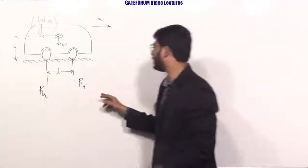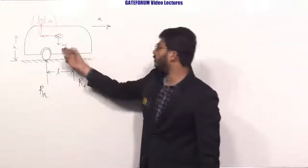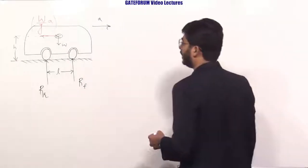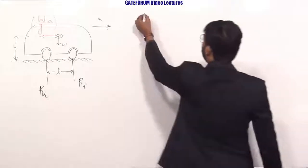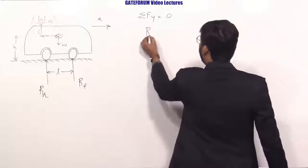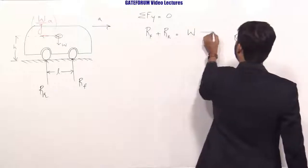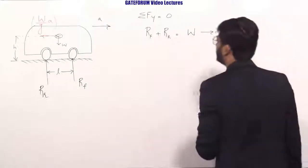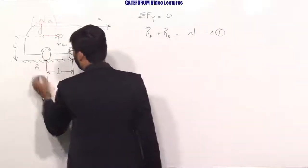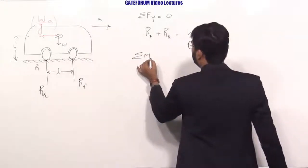We are required to express the reactions at the front and rear wheels in terms of weight and pseudo force. Writing the equilibrium equation ΣF_y = 0: R_F + R_R = W. This is the first equation. Next, taking moments about the rear wheel point R (ΣM_R = 0).